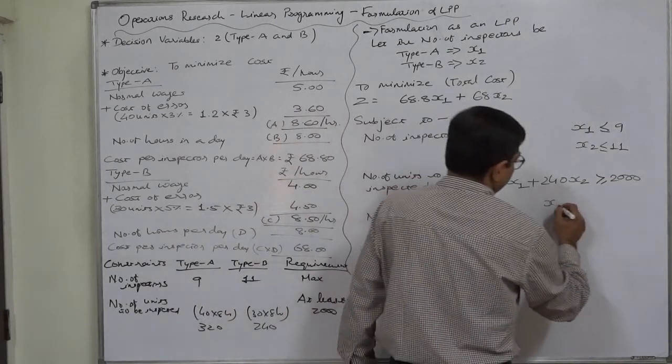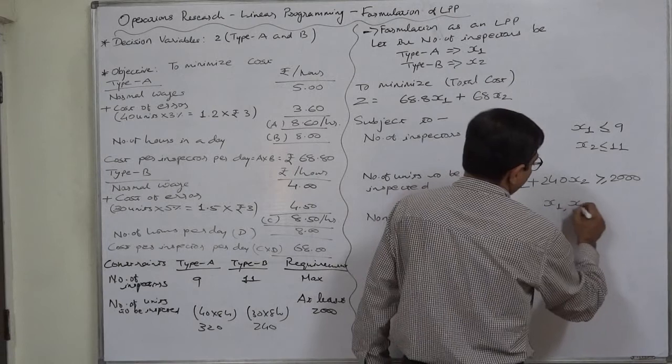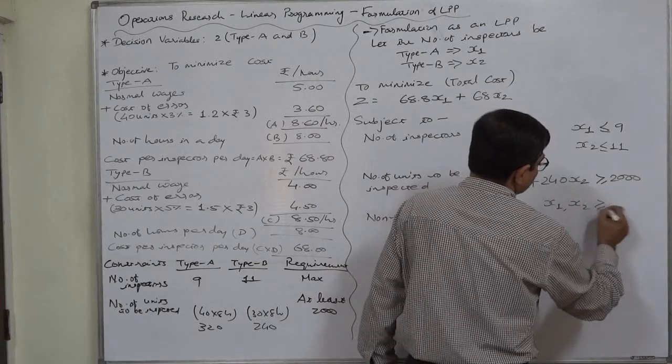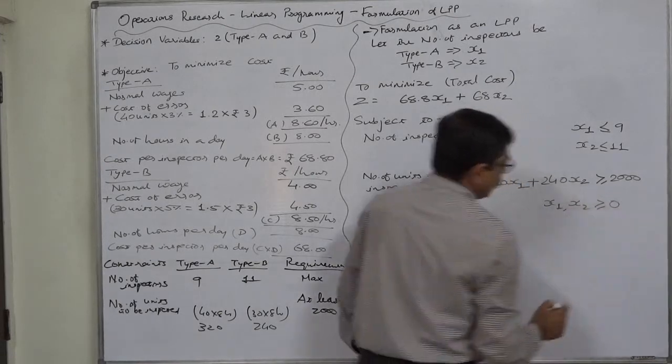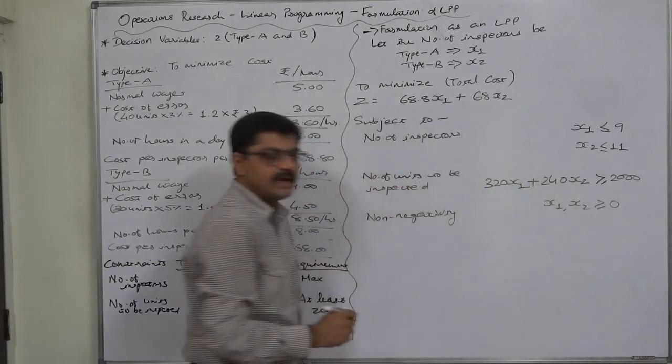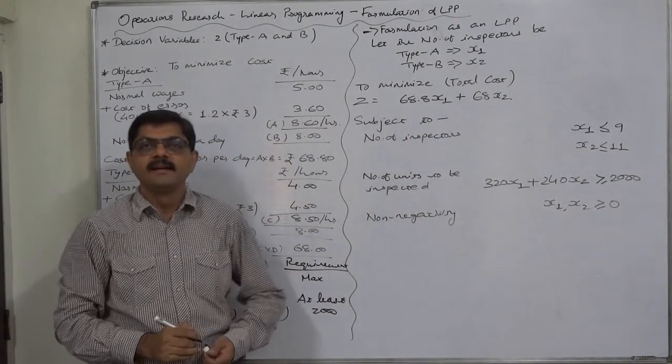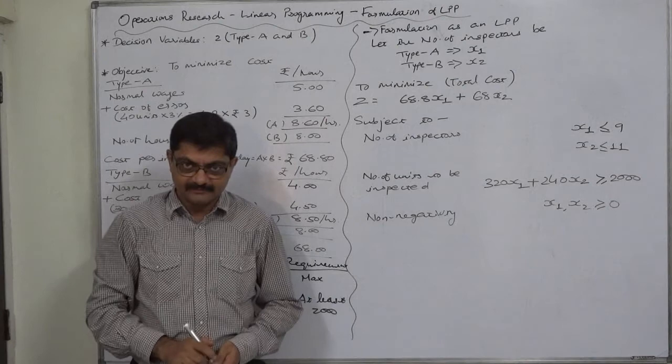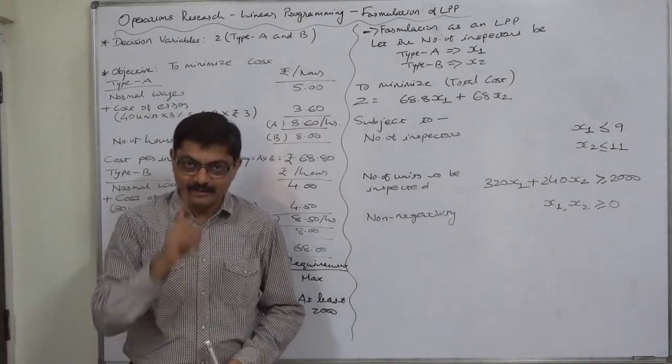The last condition is the non-negativity constraint: x1 ≥ 0 and x2 ≥ 0, because the number of inspectors can never be negative. That's it — thank you.